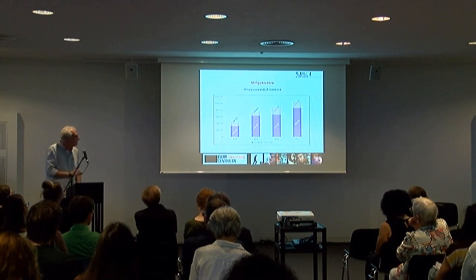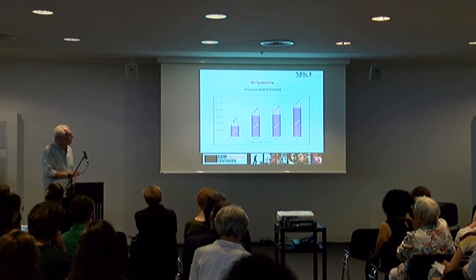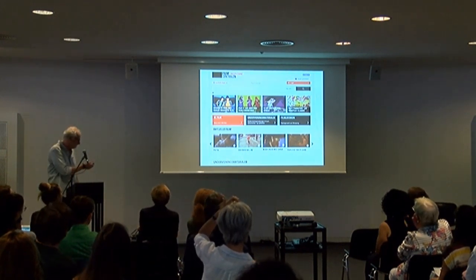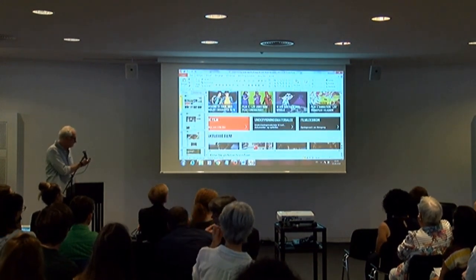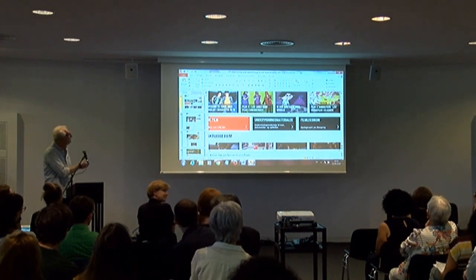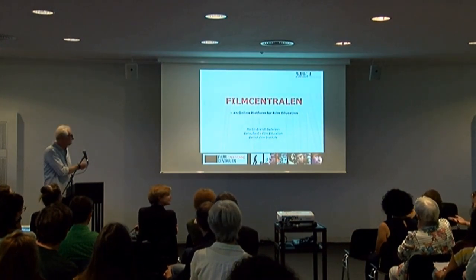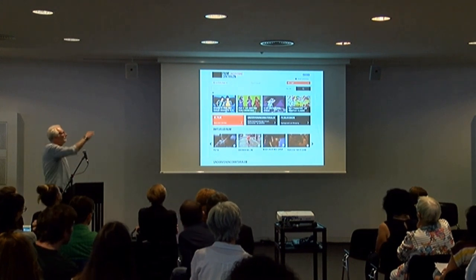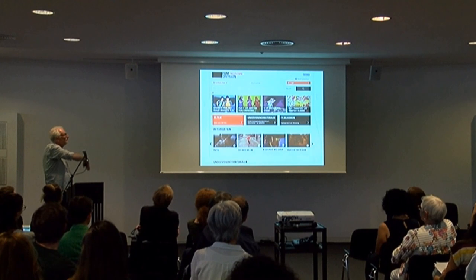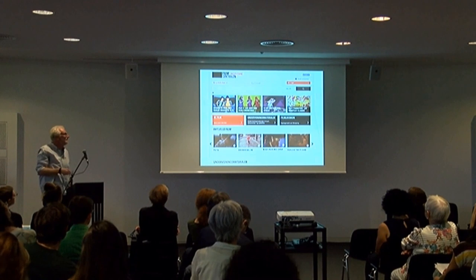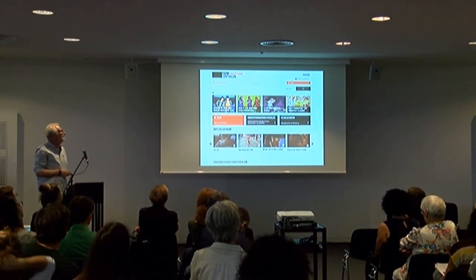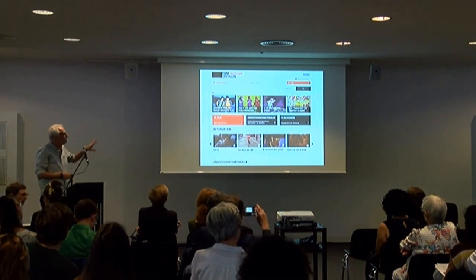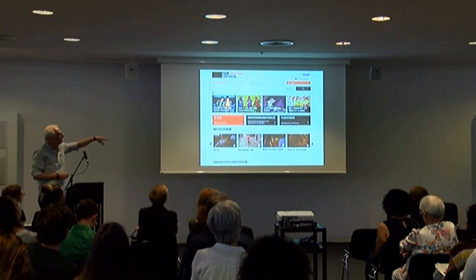I'll show you a few slides on what it actually looks like inside the platform. This is the front page for the elementary school. Up at the top we have the menu — if you put the cursor there, the menu will drop down. The gymnasium menu is on the other side. We have possibilities to highlight special new things in the four boxes at the top, and then access to the film database, the educational material, and the film encyclopedia. You can also highlight new films and new educational material, and there's a search and login box.